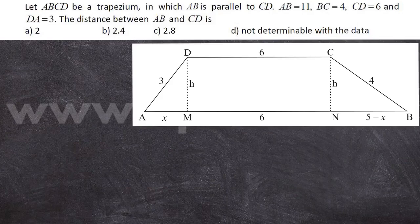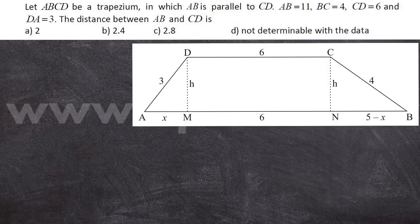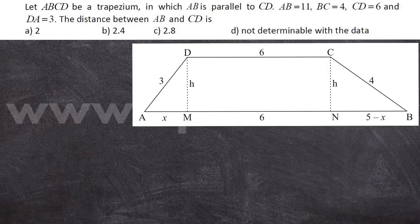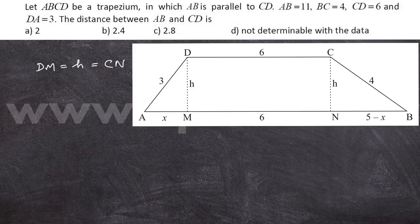This is a very easy problem based on Pythagoras theorem. I have drawn a figure here. I have dropped two perpendiculars DM and CN to AB from D and C respectively as shown in the figure. Let DM is equal to H, also equal to CN, be the distance between the parallel sides.